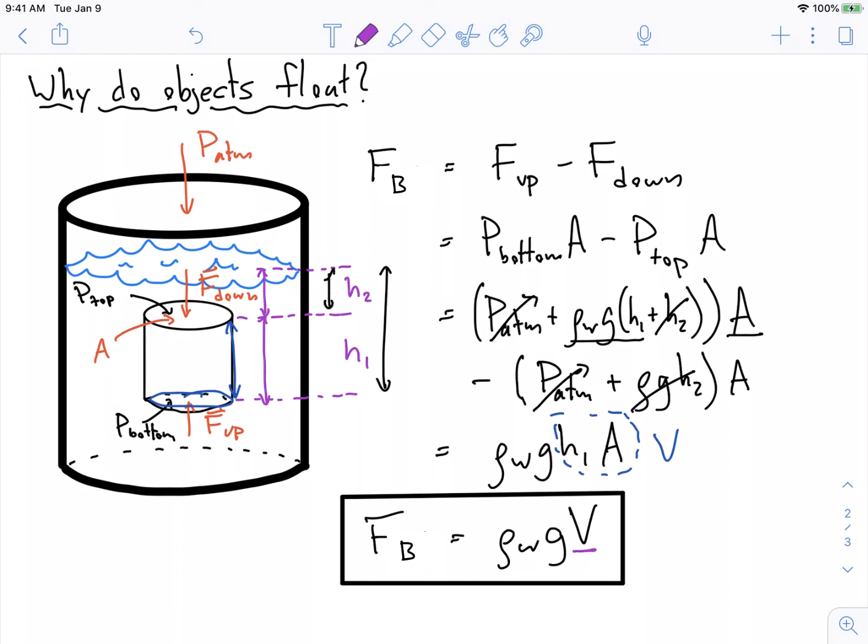Number two, this volume is the volume of the fluid that has been displaced. And in this case, it's the volume of the entire object. But that always isn't the case. And there's a derivation in the notes that shows how to derive the buoyancy force for an object that is floating in the water, and it's only partially submerged. And you'll see that this volume isn't the volume of the total object, but is actually the volume of the displaced fluid.